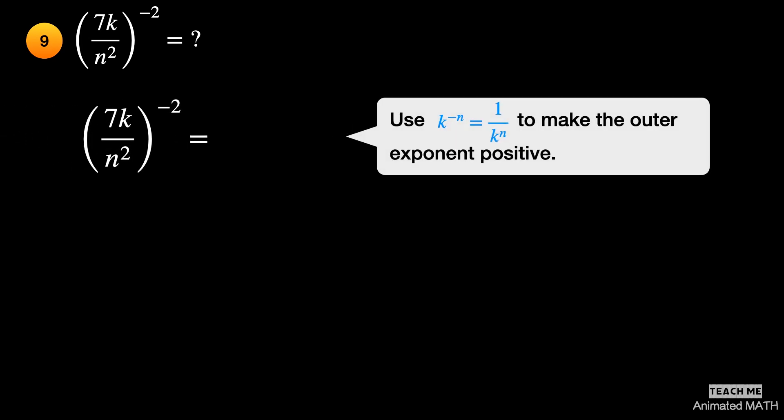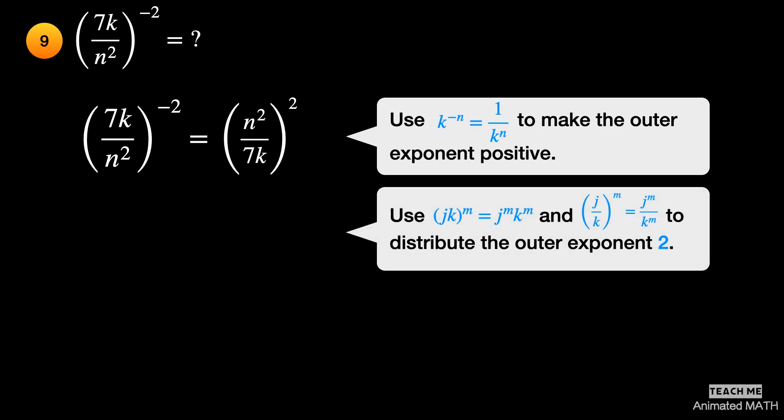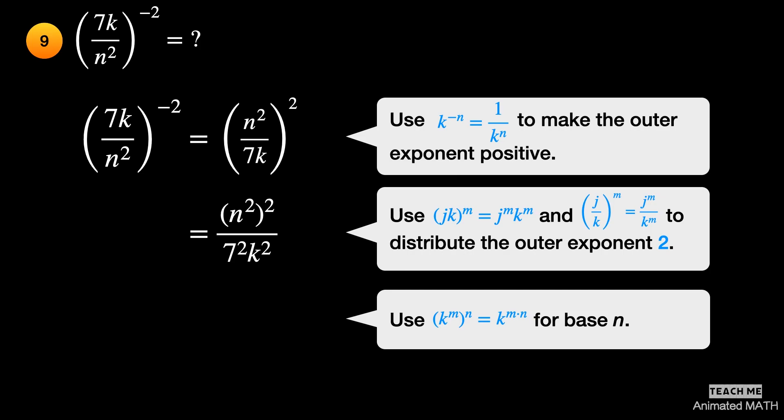First, simplify using the 4th property. Remove the negative sign of the outer exponent and use the reciprocal of the original expression inside the parenthesis. Use the 8th and 9th properties to distribute the exponent 2 to all bases inside the parenthesis. Use the 7th property for base n. The final answer is n to the 4th power over 49k squared.